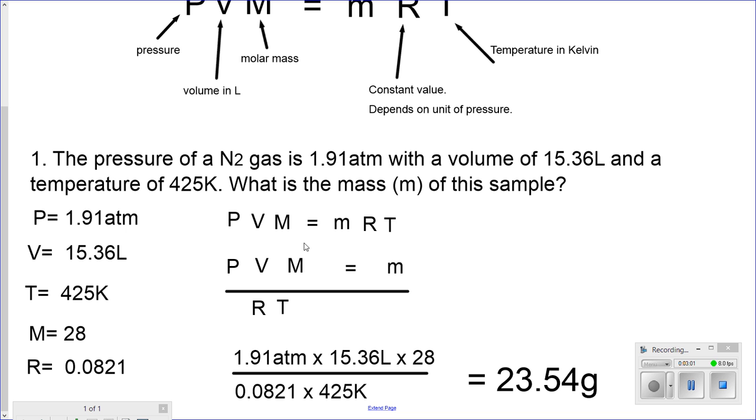Therefore, when solving for any of these variables, the only thing you have to do to isolate that variable is move the other variables to the bottom, so that the only variable left on top is the one you're searching for. In this case, small m.